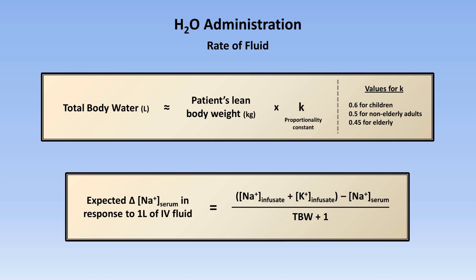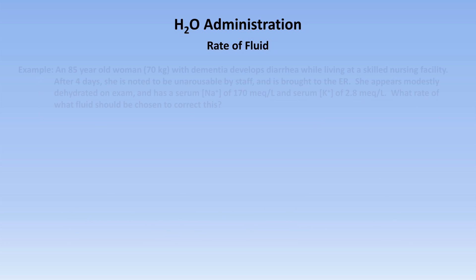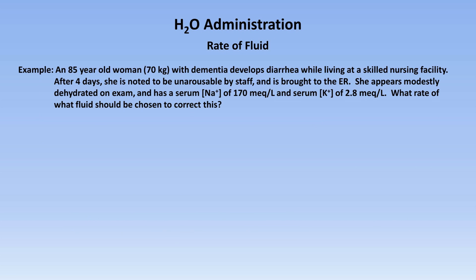Let me work through our first example to demonstrate. An 85-year-old woman with a lean body weight of 70 kg and dementia developed diarrhea while living at a skilled nursing facility. After four days, she is noted to be unarousable by staff and is brought to the ER. She appears modestly dehydrated on exam.